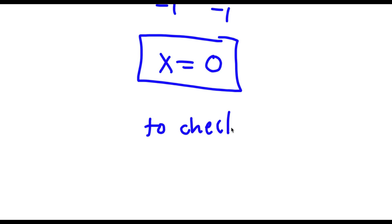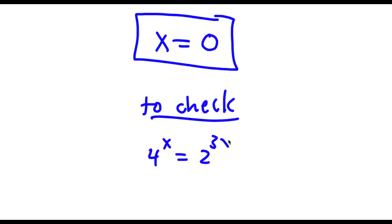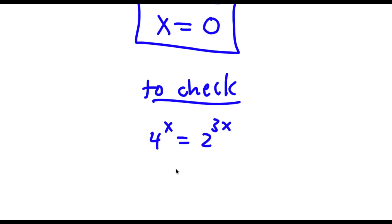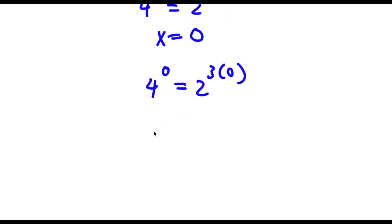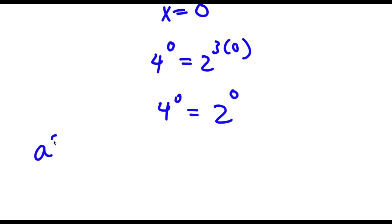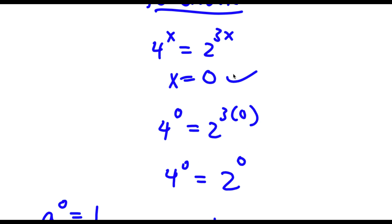Now to check: my original equation was 4 to the power of x is equal to 2 to the power of 3x. I know x equals 0, so I have 4 to the power of 0 is equal to 2 to the power of 3 times 0. Three times 0 is 0, so I have 4 to the power of 0 is equal to 2 to the power of 0. Any number to the power of 0 equals 1, besides 0 itself. So 4 to the power of 0 is 1 and 2 to the power of 0 is also 1 — giving 1 equals 1, confirming my solution is correct.